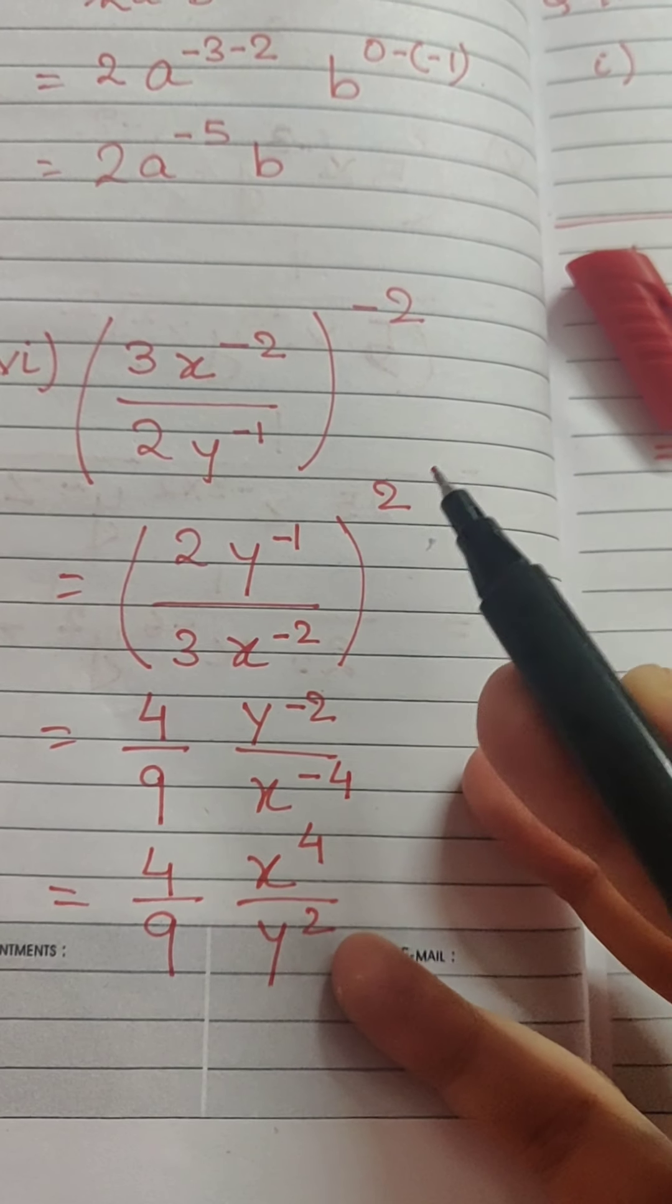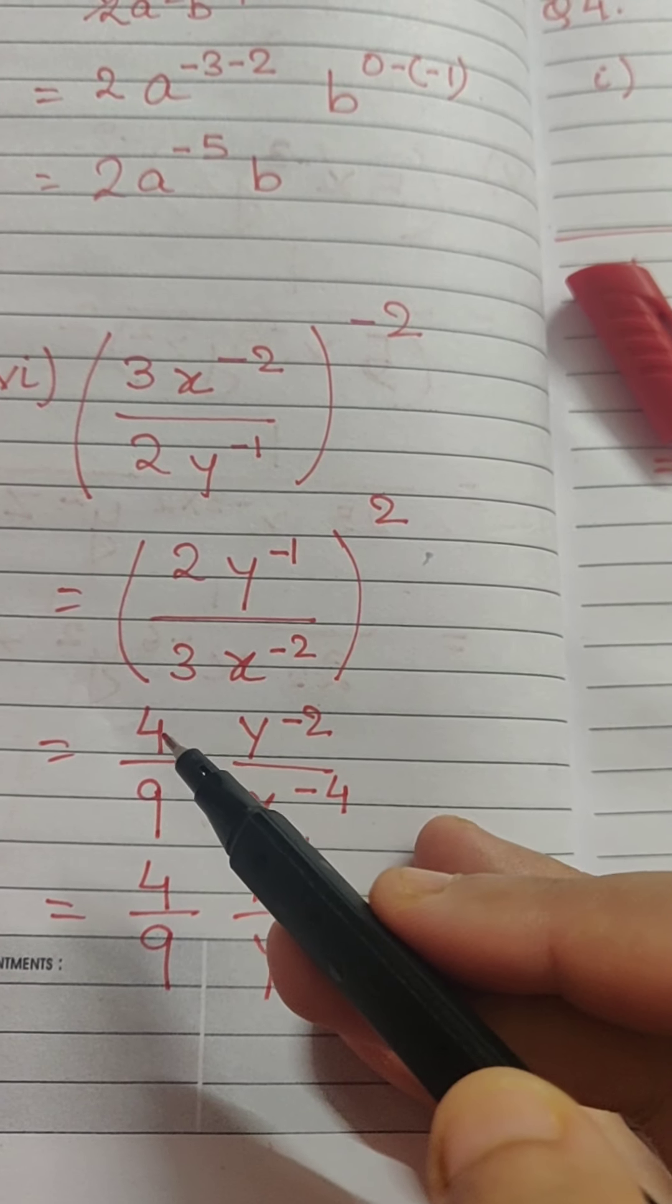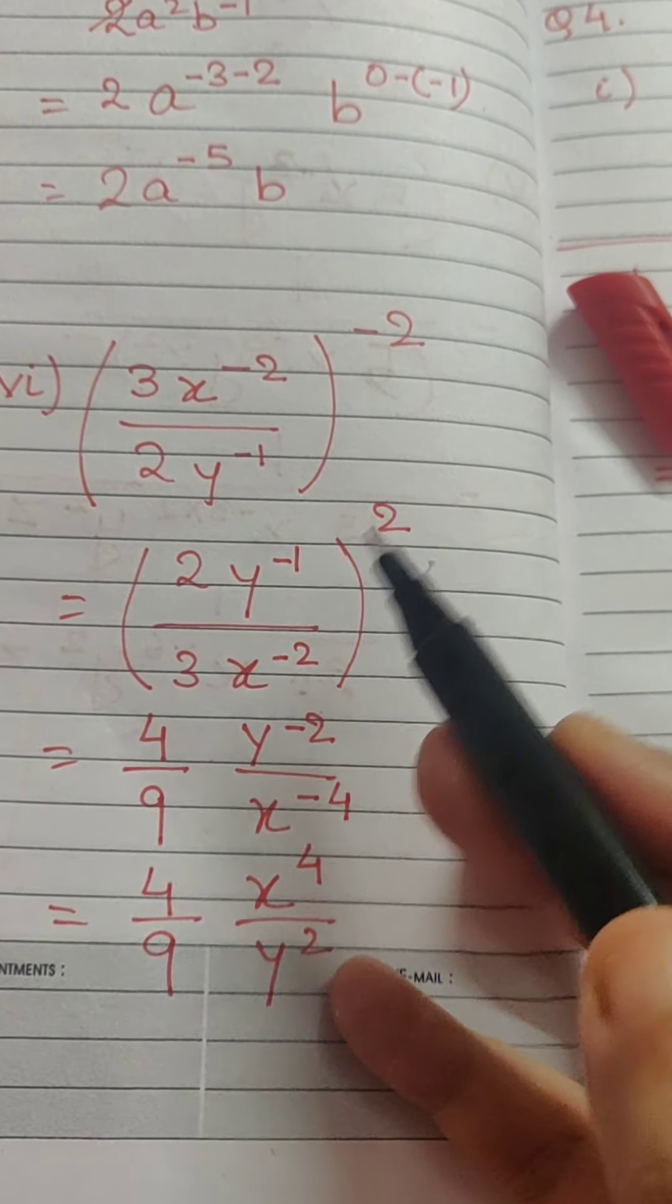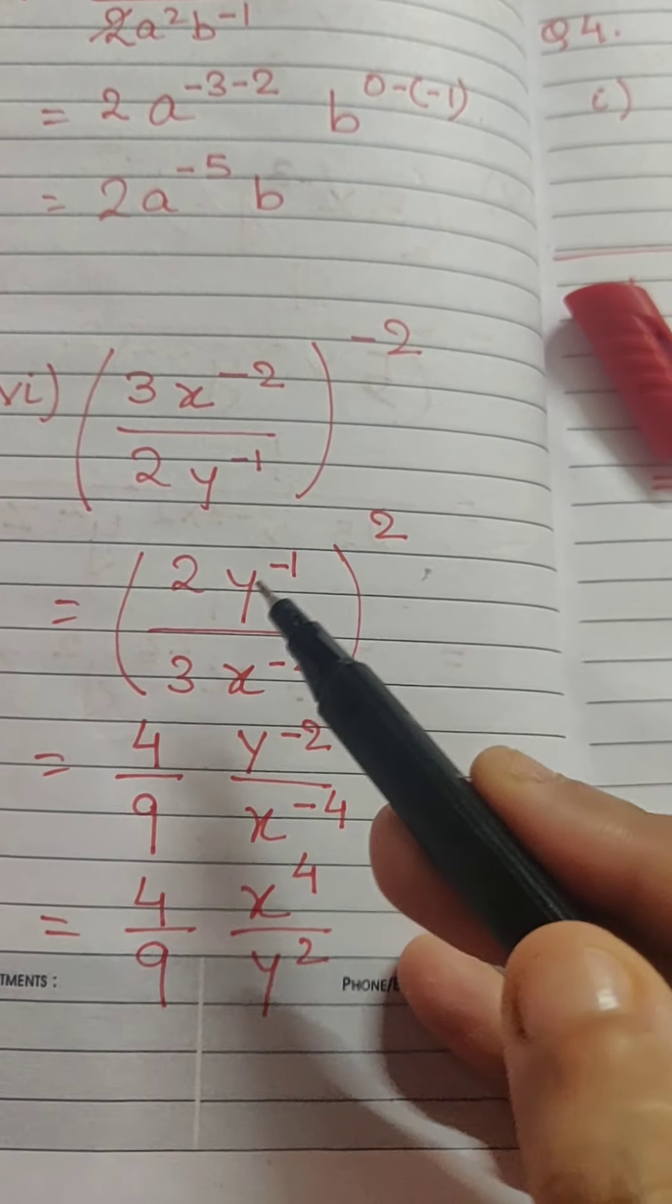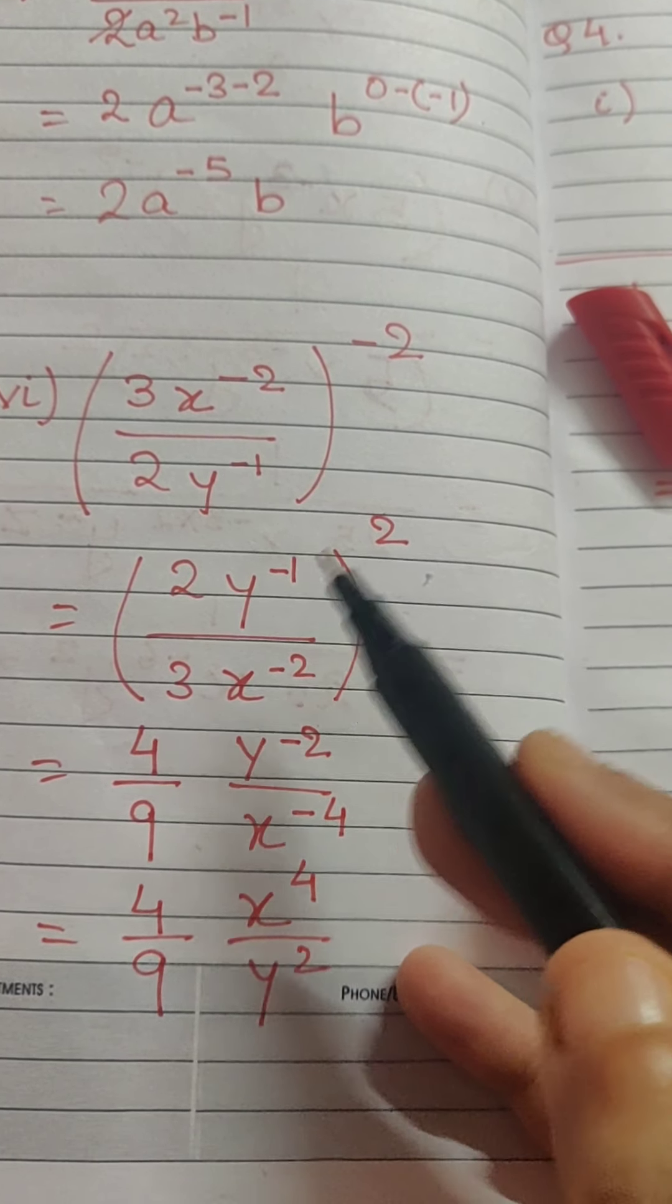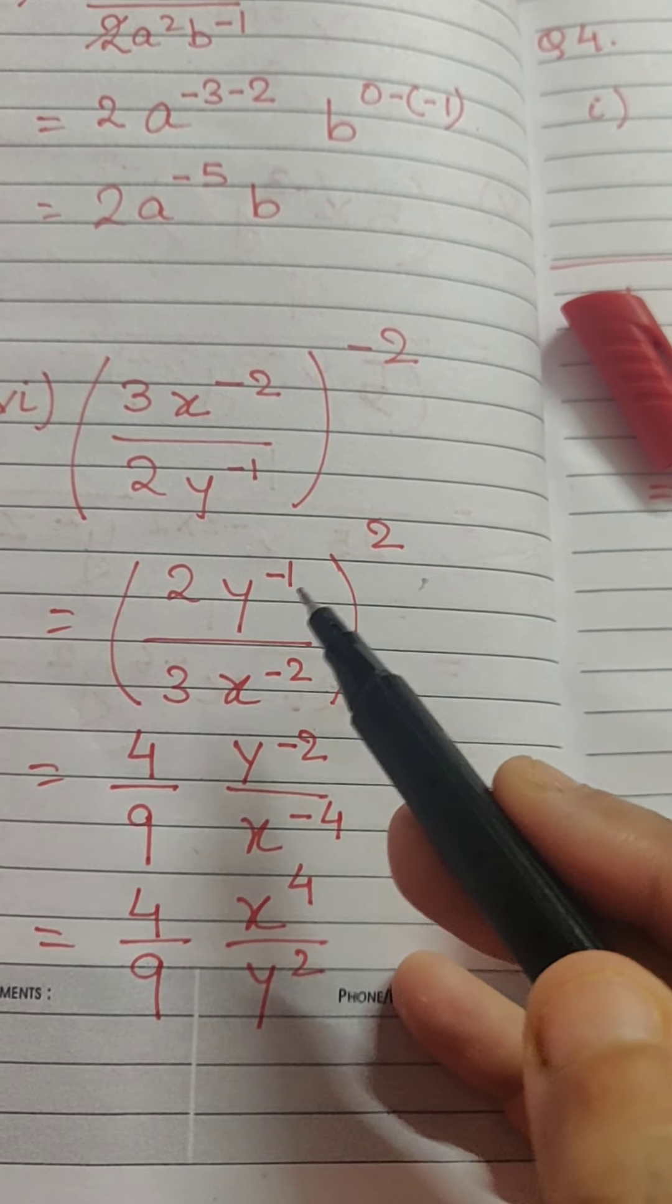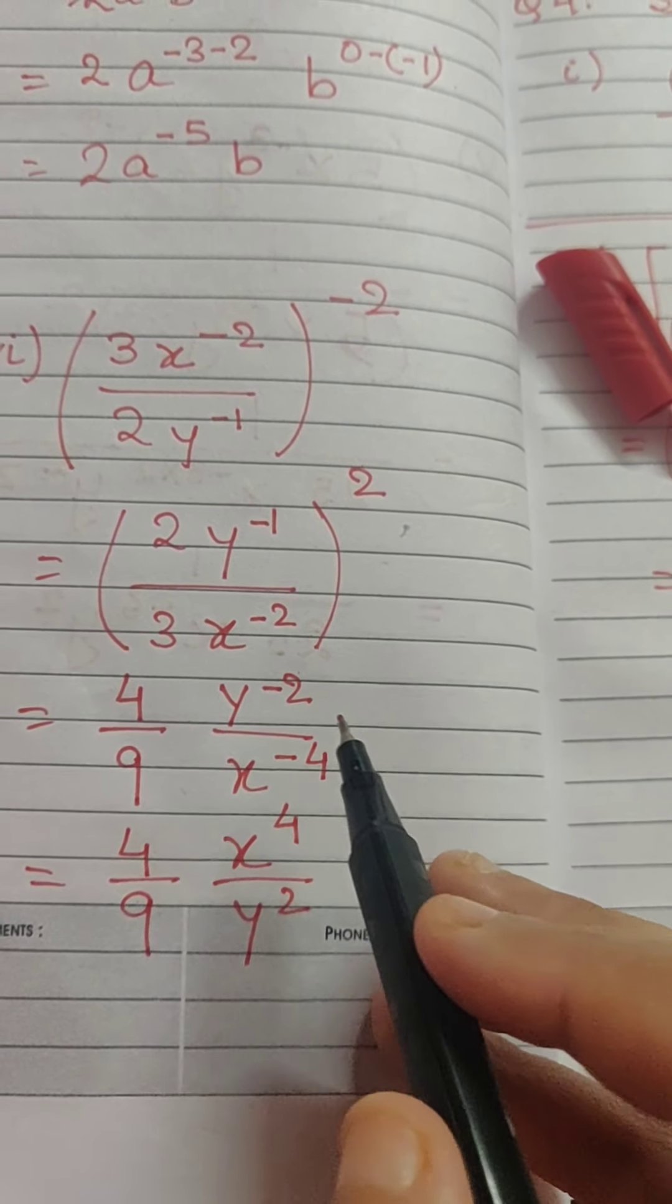So, 2 which is raised to the power 2 can be written as 4. 3 which is raised to the power 2 can be written as 9. Now, if we notice y to the power minus 1 by x to the power minus 2 and we work on it. Minus 1 into 2 we get minus 2. Minus 2 into 2 we get minus 4.